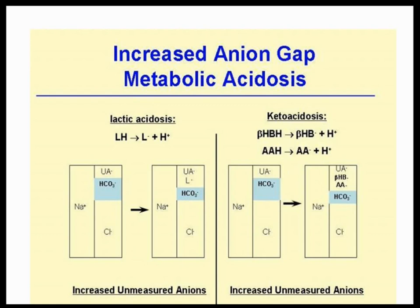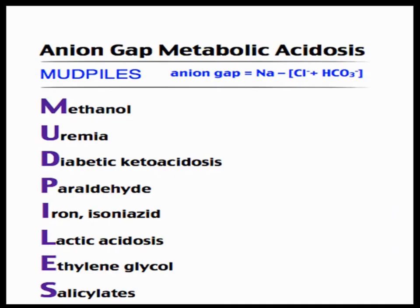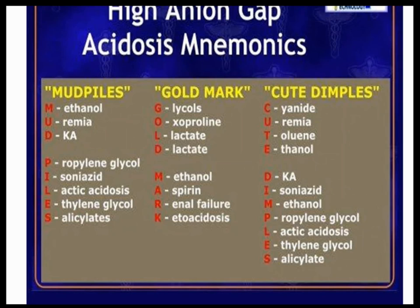Lactic acidosis and ketoacidosis are the two most important clinical causes of high anion gap metabolic acidosis. Lactic acid acts as an unmeasured anion, and in ketoacidosis, acetoacetic acid and beta-hydroxybutyric acid are the unmeasured anions. A mnemonic for high anion gap causes is MUD PILES — Methanol, Uremia, Diabetic acidosis — along with other mnemonics like GOLD MARK and CUTE DIPPLES.